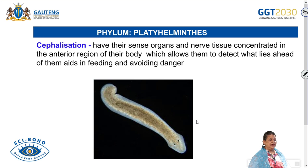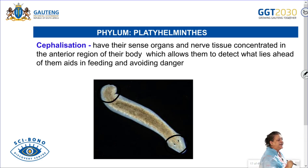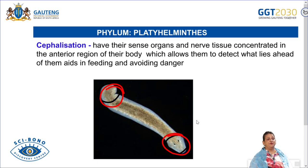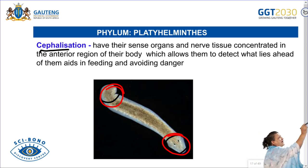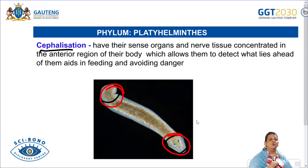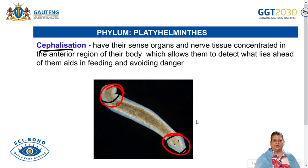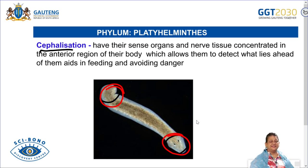Platyhelminthes show cephalization — you can see eye-like structures and a definite head end, with a definite tail end. Because of the definite head end they are sensitive to what lies ahead. Cephalization means sense organs and nerve tissue are concentrated in the anterior region, allowing the organism to detect what lies ahead. Their simple cells tell them whether they are approaching a rock or prey, aiding in feeding and avoiding danger like strong water currents.